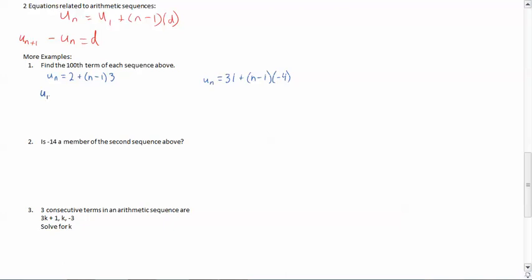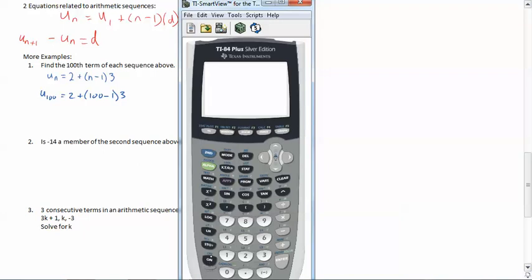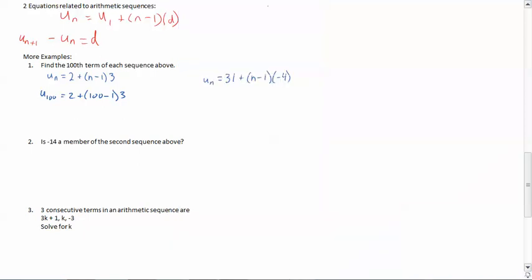So let's go ahead and put 100 in. So we're just going to say u₁₀₀, the hundredth term, is equal to 2 plus 100 minus 1 times 3. And easy as cake, we'll call for Mr. Calculator. We'll go to 2 plus 100 minus 1, which is 99 times 3, and there we go. We got 299.